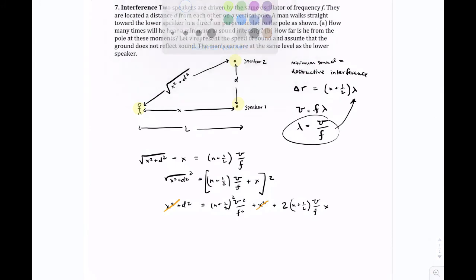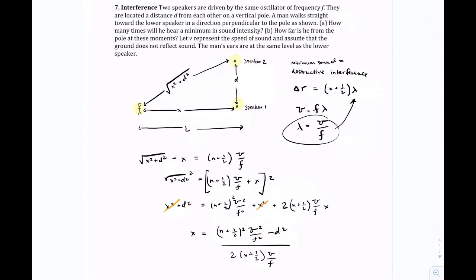And then you just do a little bit more rearranging. So we just need to get X by itself. And it turns out you can end up with X is equal to N plus one-half squared V squared over frequency squared minus D squared divided by all the stuff that was the coefficient of X. And that's actually your answer for part B.